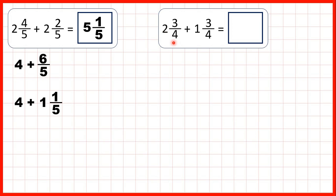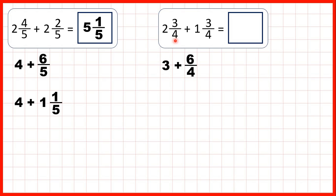Now we have 2 and 3 quarters, and we're adding 1 and 3 quarters. If we add the fractions together, 3 quarters plus 3 quarters is 6 quarters, but that's an improper fraction, so we'll know that we're going to need to change it back into a mixed number and then add that to our whole numbers. So 2 plus 1 is 3, and 3 quarters plus 3 quarters is 6 quarters, because remember when we add fractions, the denominator stays the same.